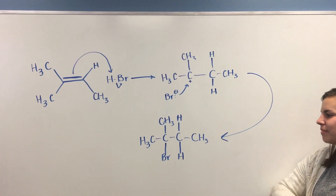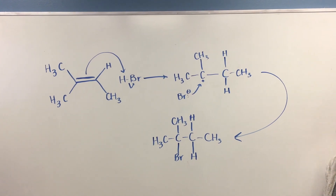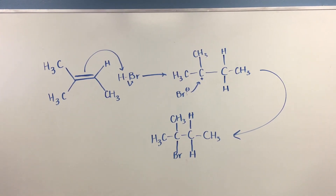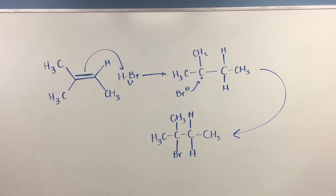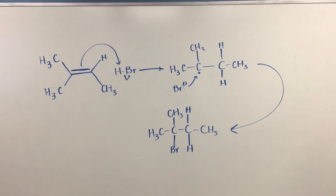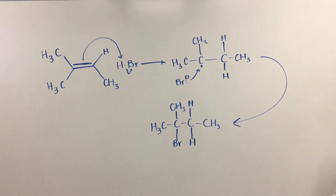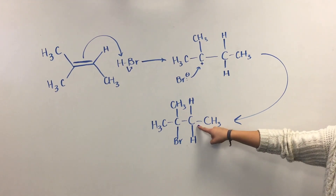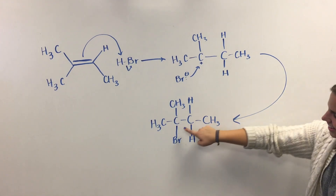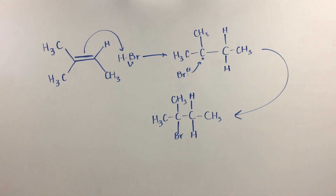So why did the hydrogen bond to this carbon instead of that one? Oh, I know this — it's called Markovnikov's rule. Markovnikov's rule says that the hydrogen will bond to the carbon that has the most hydrogens already bonded to it. This carbon is already bonded to two hydrogens, while the other one isn't bonded to any. That's why only one orientation is possible.